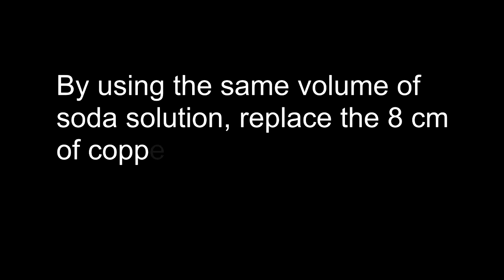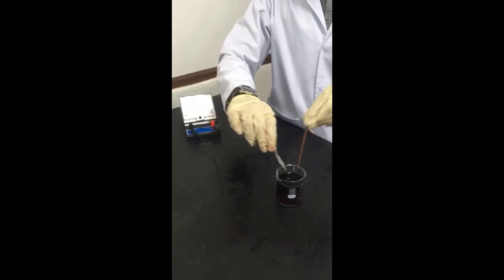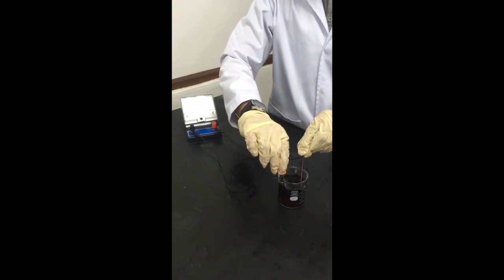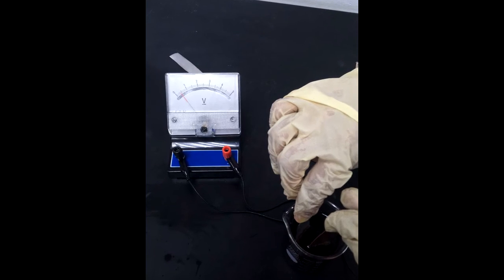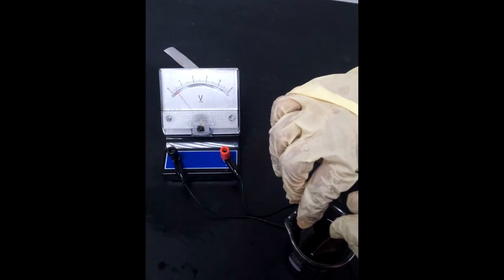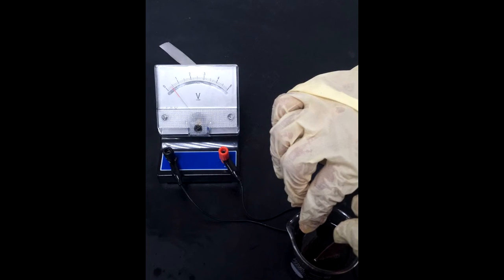By using the same volume of soda solution, replace the 8 cm of copper strip with 5 cm of copper strip. You will see that the voltmeter reading shows greater value when using more volume of soda solution.